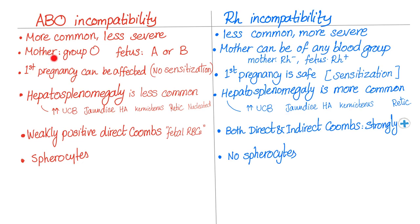In ABO incompatibility, the mother is blood group O and the fetus can be blood group A or B. In RH incompatibility, the mother can be of any blood group but must be RH negative, while the fetus is RH positive. The ABO blood group of the fetus — A, B, or O — doesn't matter.